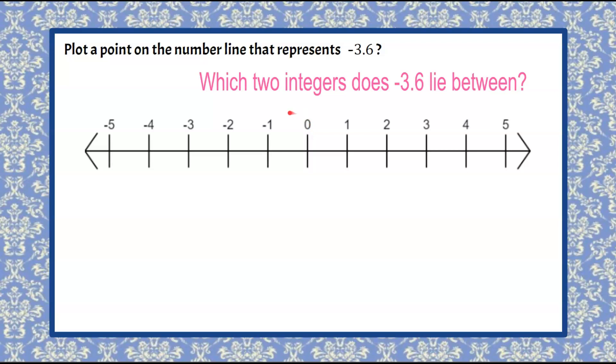So when we travel, we go negative 1, negative 2, negative 3, and we know that we're going to have to go a little bit further. So we know that negative 3.6 is going to lie between negative 3 and negative 4.